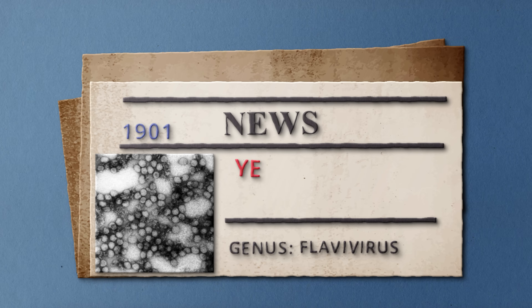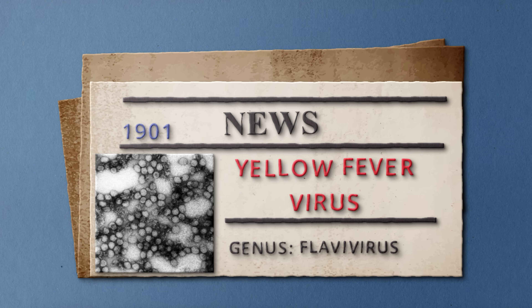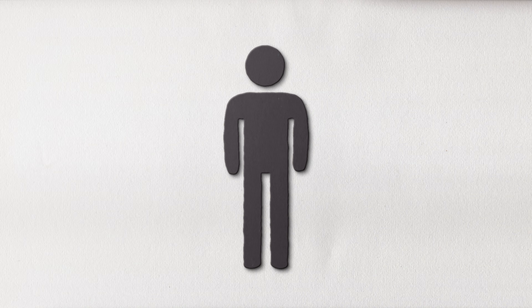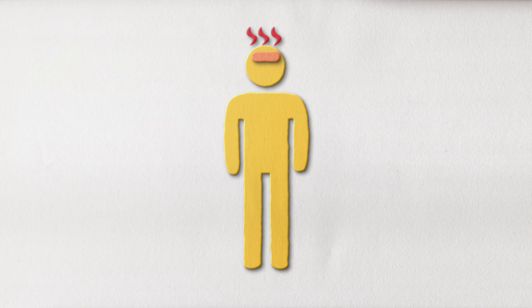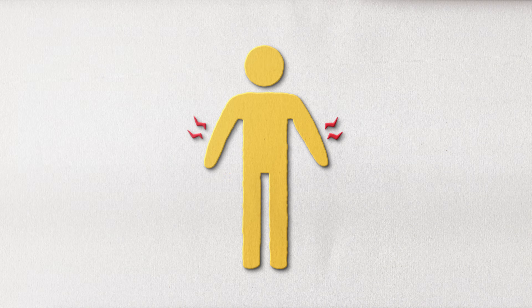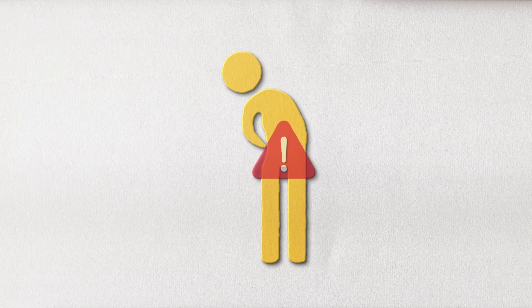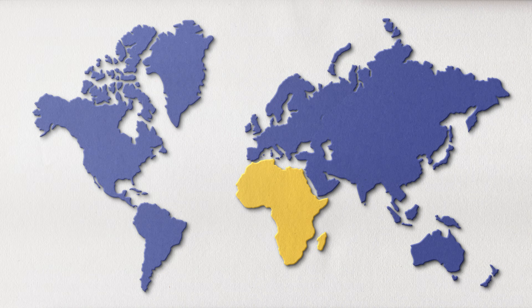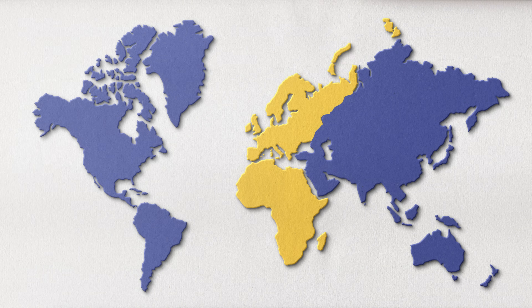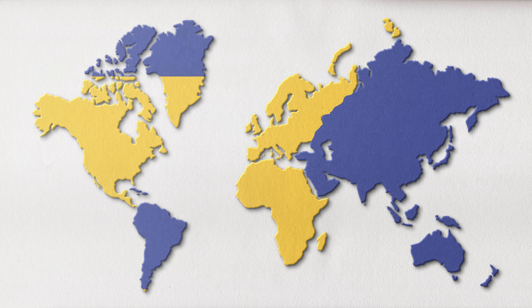This virus was yellow fever — one of the most lethal and feared diseases in human history. As the name suggests, yellow fever causes high fevers and jaundice, or yellowing of the skin, and other symptoms like headache, muscle pain, vomiting, and in severe cases, liver failure, which can be fatal.